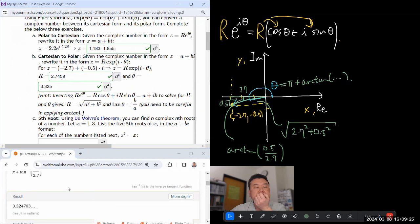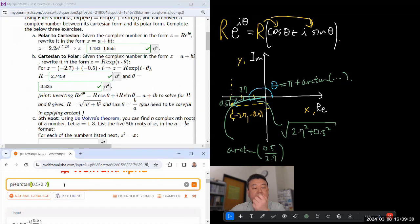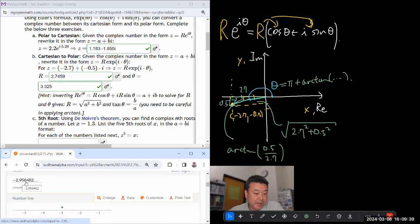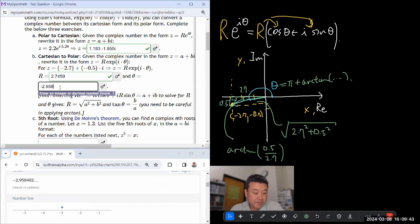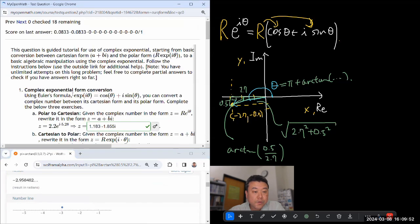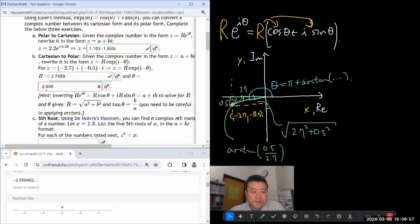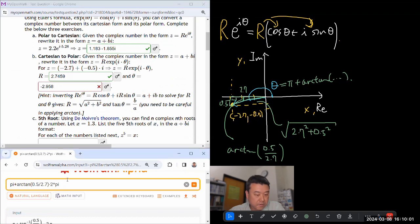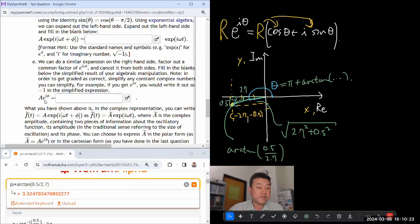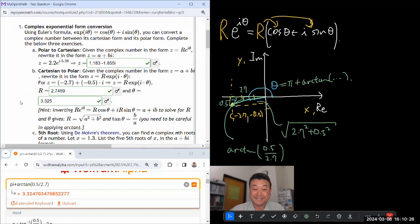I have square root of 2.7 squared plus 0.5 squared - that gives me the magnitude 2.7459. And theta will be pi plus arc tangent of 0.5 over 2.7, which is 3.325 radians. Those are graded as correct. One thing I'm wondering - if we take this whole thing and subtract 2 pi, that should still be a correct answer, but I think the way it's programmed it doesn't accept those other answers. So the question should specify that your answer for theta should be between 0 and 2 pi.